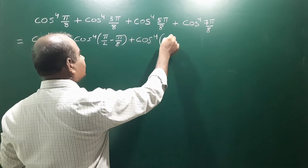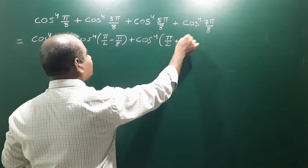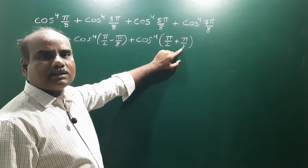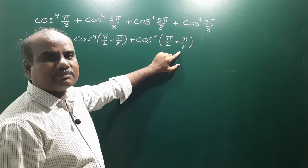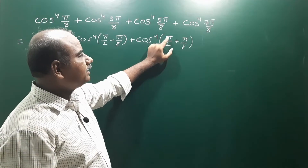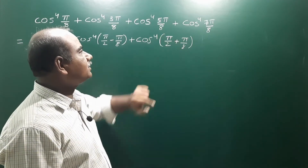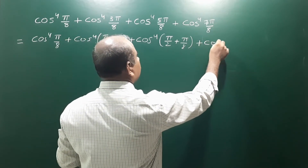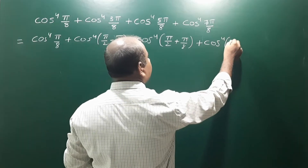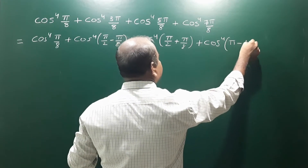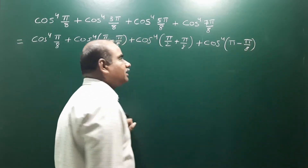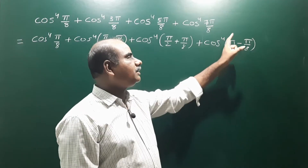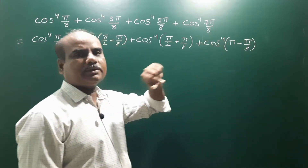The third term cos⁴(5π/8) can be written as cos⁴(π/2 + π/8), since taking LCM of 2 and 8 gives 8, so 4π/8 + π/8 = 5π/8. And the last term cos⁴(7π/8) can be written as cos⁴(π - π/8), since 8π/8 - π/8 = 7π/8.